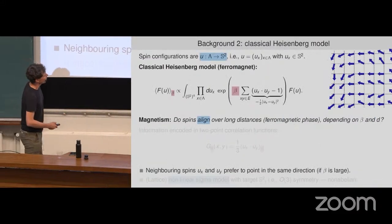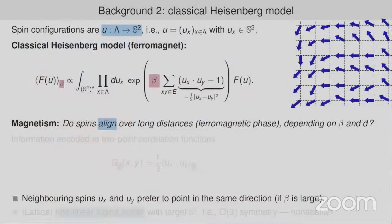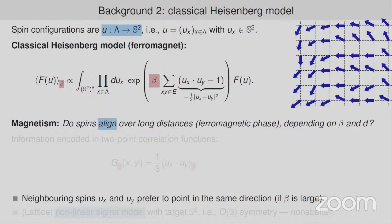Let me say what I mean by a spin system. By spin system, what you should have in mind is the classical Heisenberg model. We have a graph lambda, a lattice — say a finite one. At every lattice site there's a spin which takes values in a two-dimensional sphere. I'm going to be denoting these spins by u_x, where x is the point in the lattice. The expectation of the classical Heisenberg ferromagnet is given by integrating over all spin configurations with a Gibbs weight. The Gibbs weight tries to align spins; the larger beta is, the more it tries to align the spins.